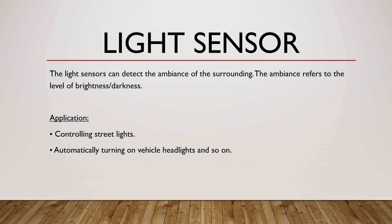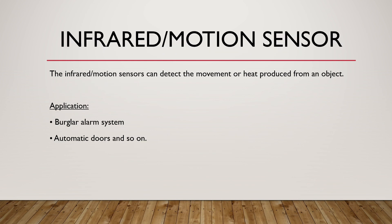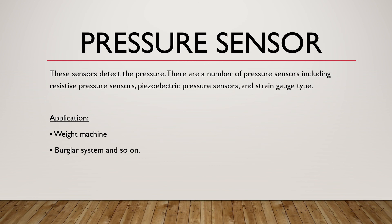Light sensor: detects the ambient level of brightness or darkness in the surrounding. Applications include controlling street lights or automatically turning on vehicle headlights. Infrared or motion sensor: detects movement or heat produced from an object. Normally used for burglar alarm systems and automatic doors. Pressure sensor: detects pressure. Types include resistive pressure sensors, piezoelectric pressure sensors, and strain gauge type. Applications include weight machines and burglar systems.